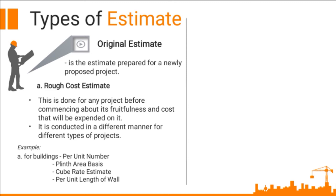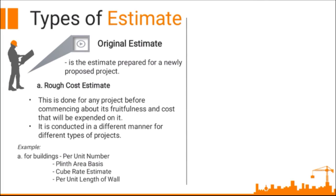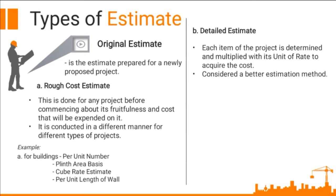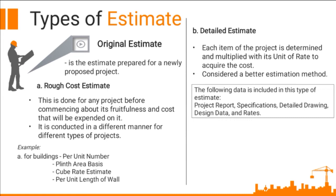Foundation includes the cost of damp roof course — the barrier designed to prevent moisture rising through the structure — and the cost of digging, filling, etc. The superstructure includes cost of masonry, woodcrafting, roofing, and finishing, etc. Detailed Estimate: each item of the project is determined and multiplied with its unit of rate to acquire the cost. Considered a better estimation method, the following data is included: the project report, specifications, detailed drawing, design data, and rates.